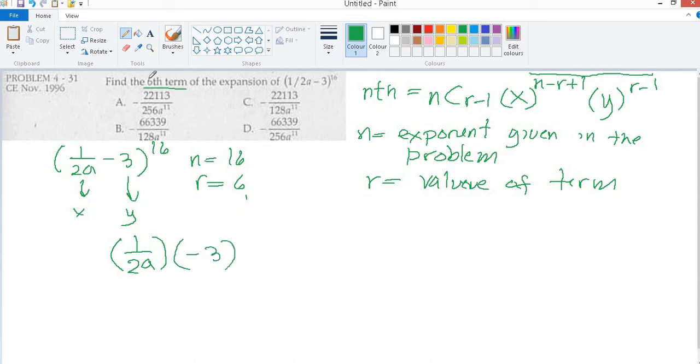Since we're looking for 6, we have r is 6, therefore r-1 is 5. So what number will we put in 1/2a so that the sum is 16? When you add the exponent, the sum is 16, so therefore this is 11.